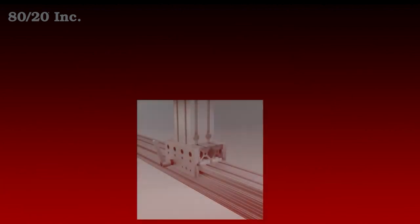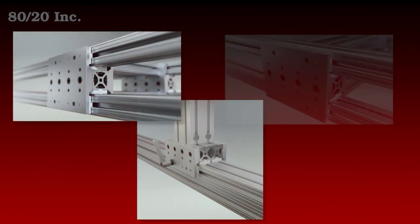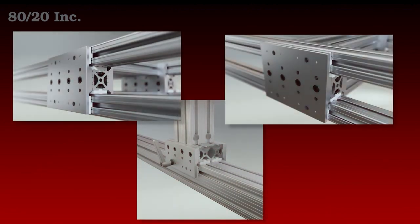Unibearings come preassembled with extra shims and are available in both single and double style. The single bearing is commonly used in applications with one guide rail, while the double bearing is typically coupled with two guide rails.